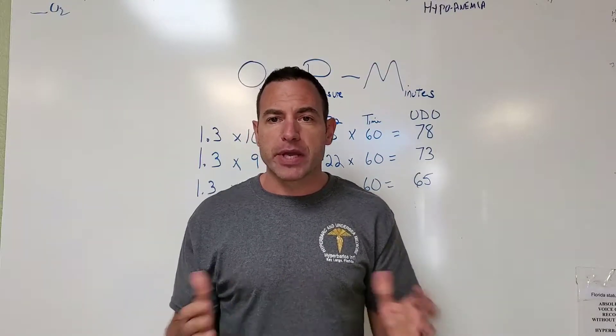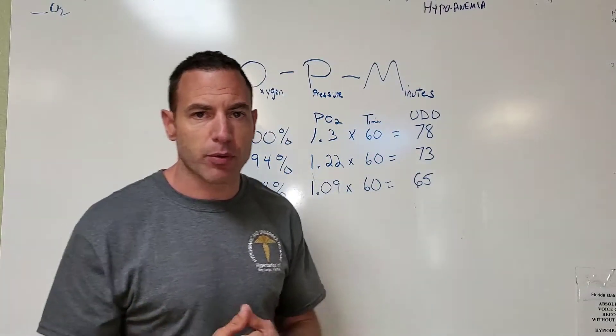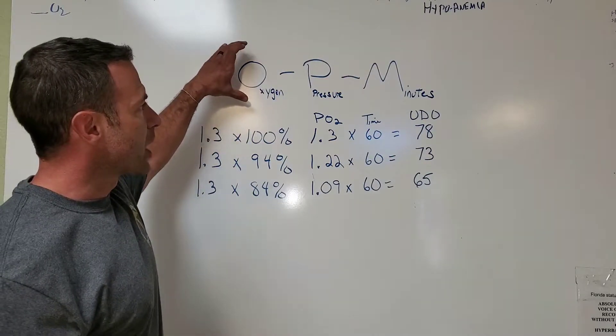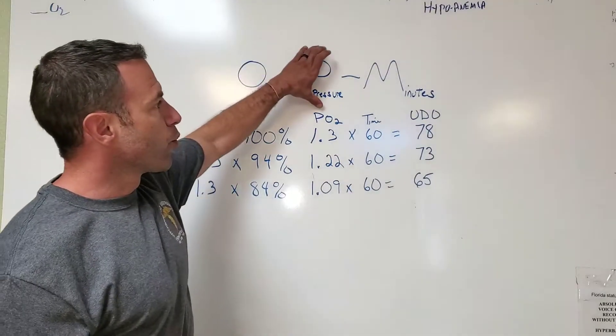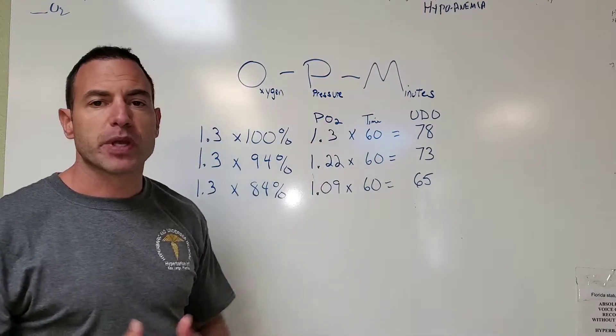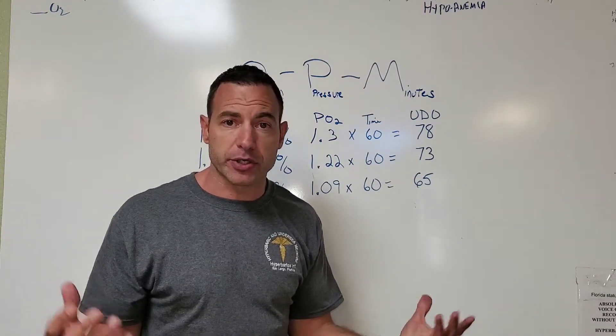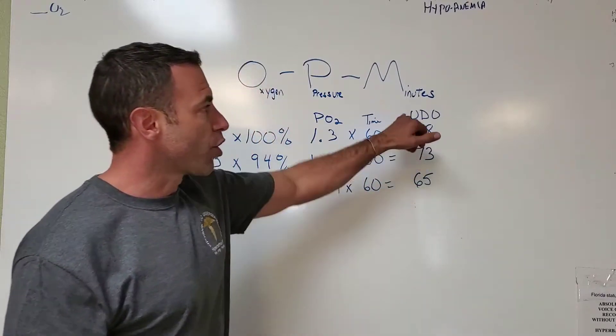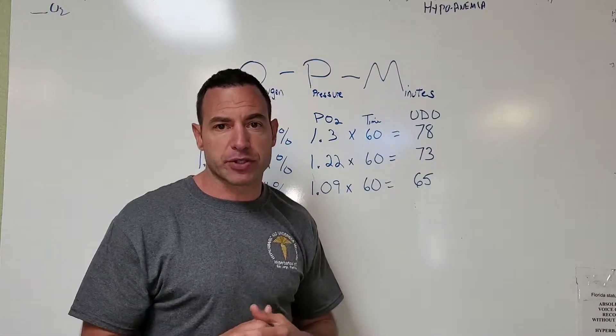Here we have a really simple example that we'll go through. Basically, what we're saying is the amount of oxygen with the amount of pressure and the length of time, the amount of minutes—OPM—is really the full calculation of oxygen dosage. We're going to call that units of dosage of oxygen.